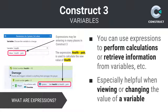You have a lot of options when working with variables in Construct, such as the ability to use expressions when working with their values. Variables can be changed dynamically and may have their values assigned from the result of some calculation. In this example, I'm setting the value of the health global variable to the result of the arithmetic operation of health minus pain.